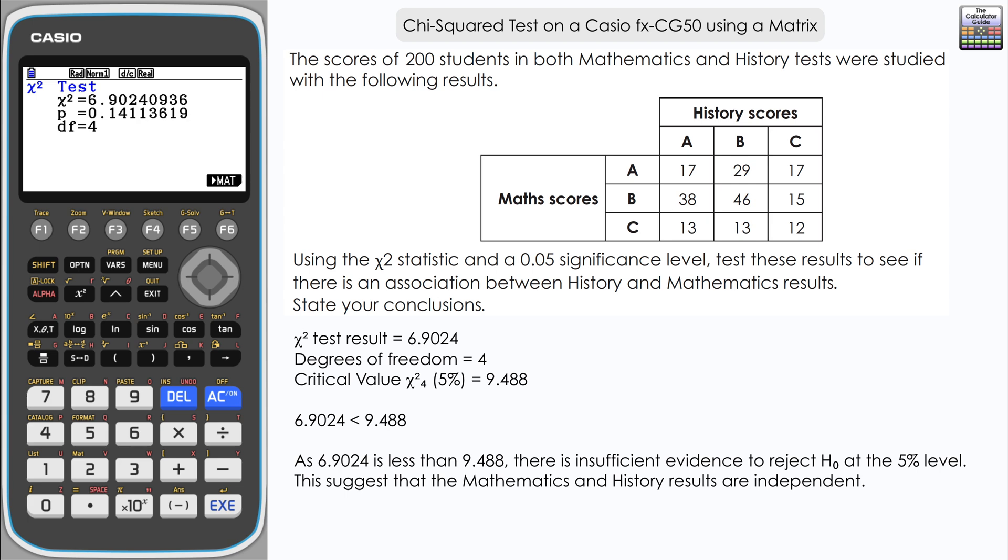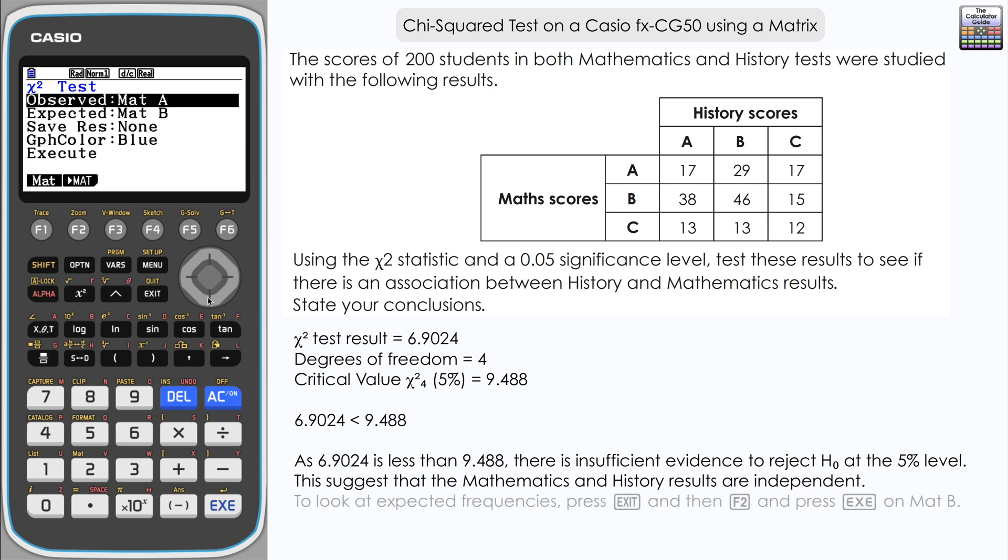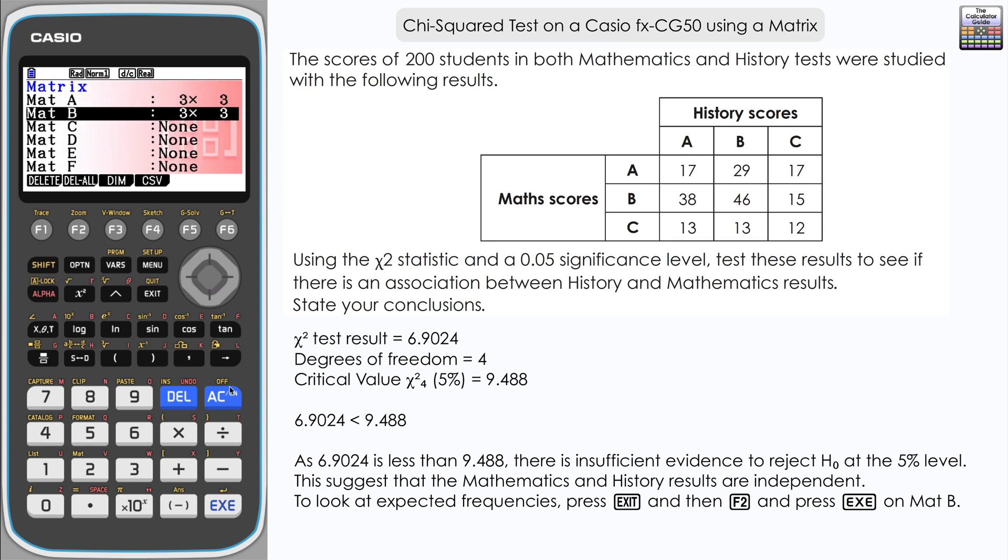Just before we end, if we did want to have a look at the expected results table, we can. If you press exit and press F2, you can see that matrix B is already defined there as a 3x3 matrix. If we go down and execute, we can have a look at the expected frequencies.